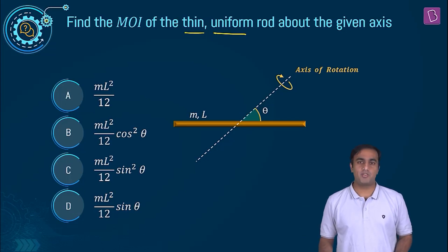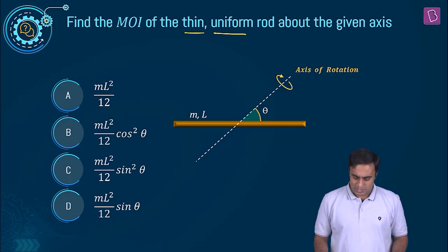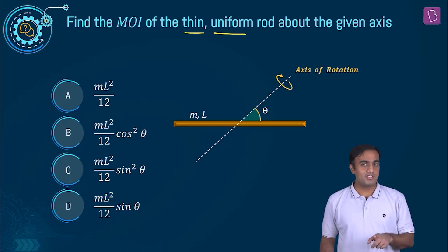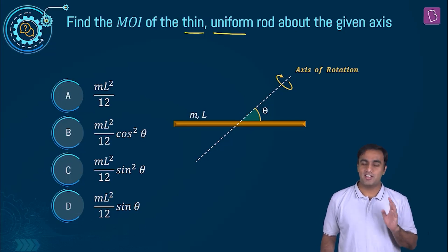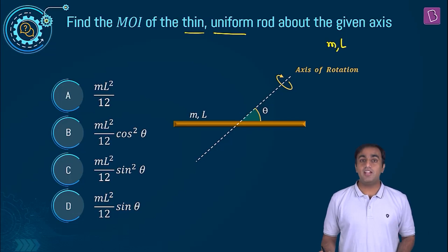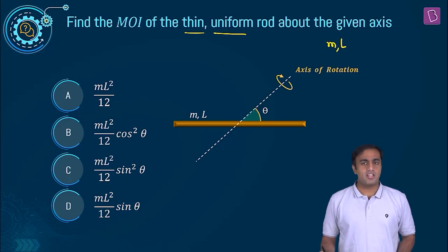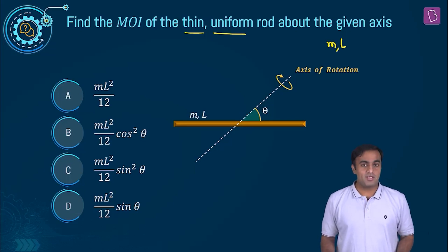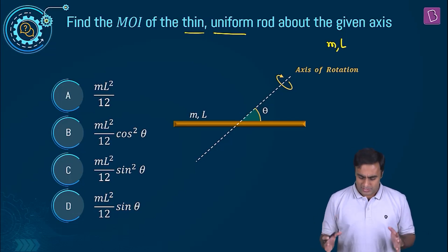Now look at the axis of rotation. Is the axis passing through the centre of mass? Yes. But is it perpendicular to the length of the rod? No. If it was, we know the moment of inertia for such a standard case. If the mass of the rod is m and the length is L, then it would be ml² by 12. If the given axis of rotation is passing through one end of the rod and perpendicular to the length of the rod, the moment of inertia happens to be ml² by 3. But this is different.